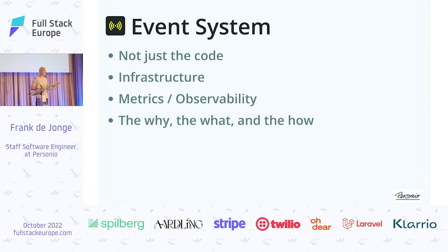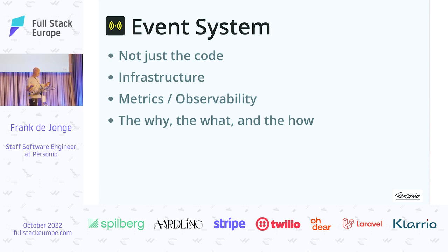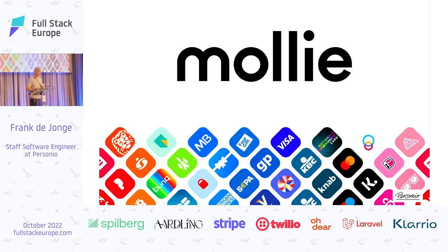It's not just the code. It's also the design decisions — how do they impact the technologies we use? Can we just pick any technology and do what we like, or do we need to satisfy certain things? It's also about having observability into how our event system works. Most importantly, we need to understand the why, the what, and the how — especially why we're designing it this way. For that, I want to introduce you to the business context in which this event system was created.